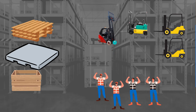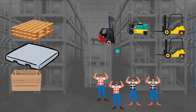Also, each forklift is able to transport certain types of products. For example, the ones in yellow might be able to transport the pallets, this one here is able to transport this one, and the one in red is able to transport everything.